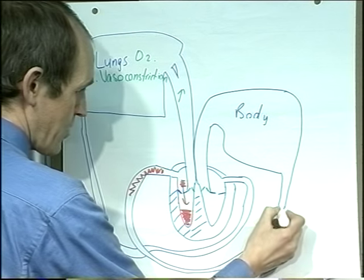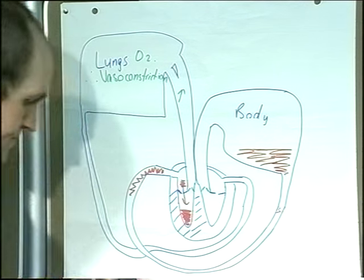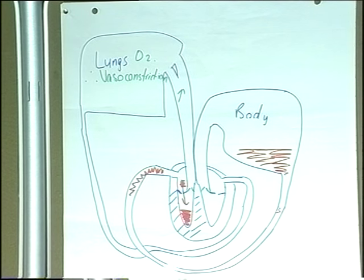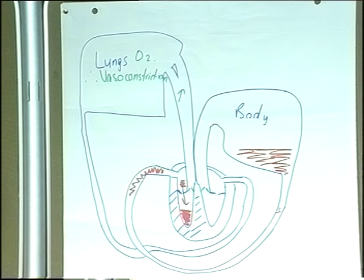Blood won't be able to drain from the body properly. That'll increase the pressure of the blood in the capillaries of the body, which will result in reduced fluid reabsorption and systemic oedema. So, cor pulmonale - right heart failure secondary to lung disease - is brought about by this mechanism.